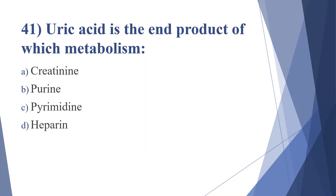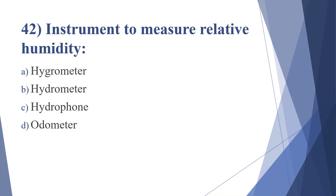Forty-first question: uric acid is the end product of which metabolism? Option A: creatinine, option B: purine, option C: pyrimidine, option D: heparin. Answer is option B, purine.